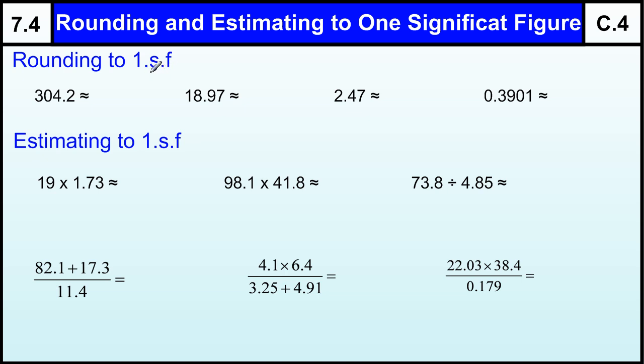Now with one sig fig, what we're doing here is looking for the first important digit. So the first important digit in any number is the left most number that isn't a zero.